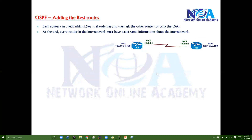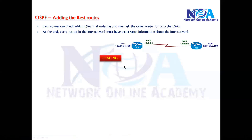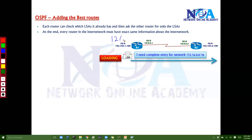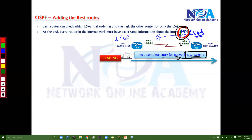Whenever a router realizes that the neighbor has some additional LSAs, it immediately jumps into the loading stage. In the loading stage, it sends out a request saying: I have only 12 LSAs, but in the previous step you said you have 15 LSAs — I need the information about those three remaining LSAs that I don't have in my database.